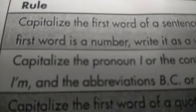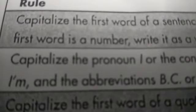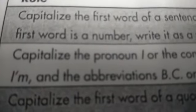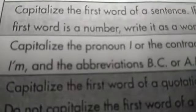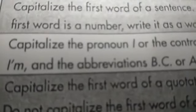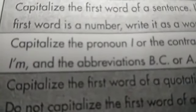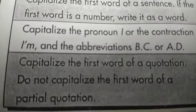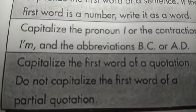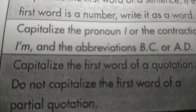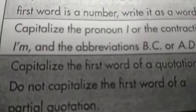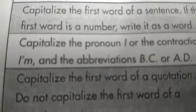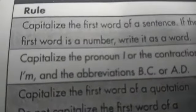The first general rule we discussed in the first class was: capitalize the first word of a sentence, and if the first word is a number, it should be written as a word. Capitalize the pronoun I, and the contractions and abbreviations, and capitalize the first word of a quotation. But if it is a partial quotation, then it need not be capitalized.